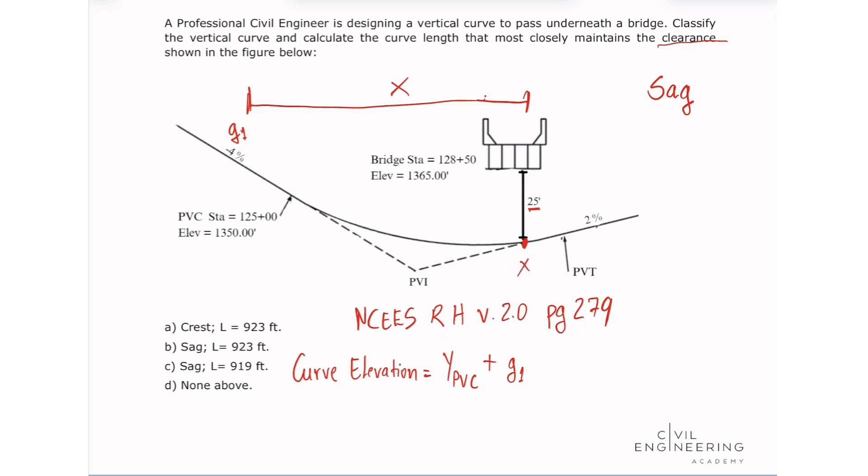So this point has a station and elevation along this curve, and we're going to multiply this by x plus a multiplied by x squared. And this is also shown as the curve elevation equals the elevation of the PVC plus our G1 times x plus x squared times G2 minus G1 divided by 2L.